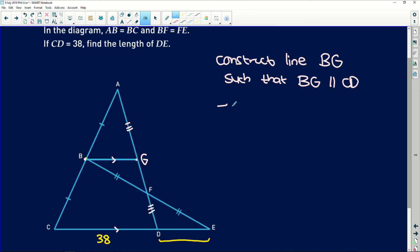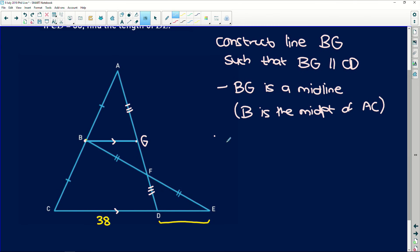So what we can say is firstly, BG is a midline. Why? Because B is the midpoint of AC. So we really know that it divides that in half there. But then we also know that BG is now half of CD. Because if you look in this big triangle ABC here, if this is half of that, then this baseline must be half of that baseline there. So we know that BG is 19 units.